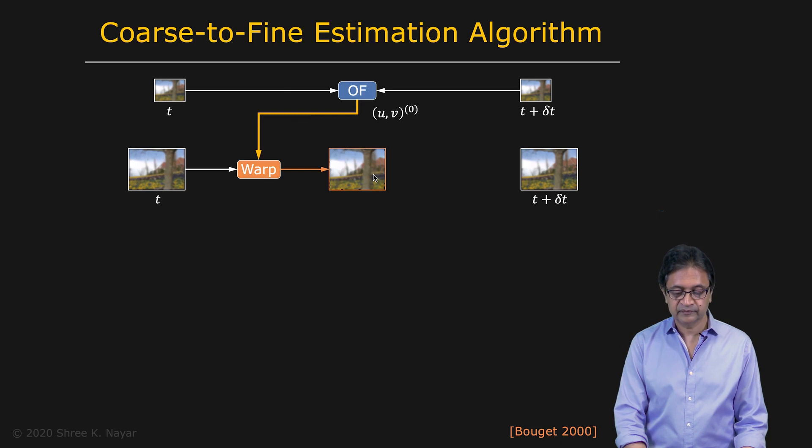Now, of course, if all of these estimates were precise and were computed at the highest resolution, this image would exactly equal this. But of course, this is being computed at a lower resolution, so it's going to be imprecise. But anyway, this is going to be closer to this image at T plus delta T than the image taken at time T. And now what we're going to do is compute the optical flow between these two images.